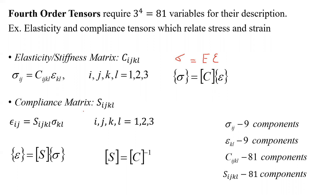The compliance matrix is just the inverse of the elasticity matrix. So rearranging, epsilon_ij = S_ijkl · sigma_kl. One interesting thing to note: the stiffness matrix word starts with S, but the symbol is C; the compliance matrix word starts with C, but the symbol is S. That's very confusing. The Latin words for stiffness and compliance start with S and C respectively, which is why those symbols are used — just make sure you don't confuse the two.